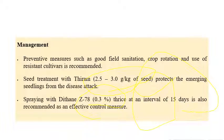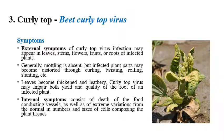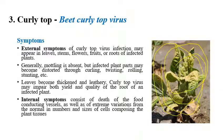The next disease is beet curly top, caused by beet curly top virus. The name itself indicates curling of leaves. Symptoms are not only observed on leaves but also on stems, flowers, fruits, and entire plant parts. The virus can also reduce the size of the plant, cause stunting, and greatly affect yield. Other external symptoms include distortion, curling, twisting, and rolling of leaves.